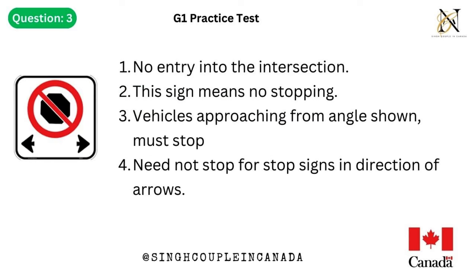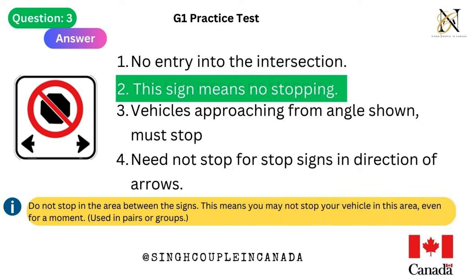Question 3. This traffic sign means: 1. No entry into the intersection. 2. This sign means no stopping. 3. Vehicles approaching from angle shown must stop. 4. Need not stop for stop signs in direction of arrows. Answer is 2. This sign means no stopping — do not stop in the area between the signs. This means you may not stop your vehicle in this area even for a moment. Used in pairs or groups.